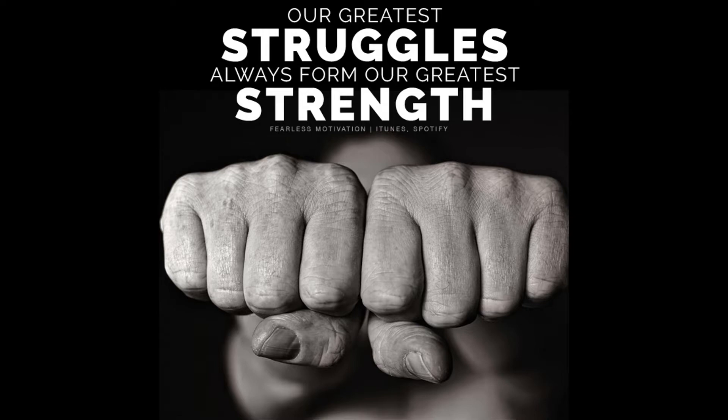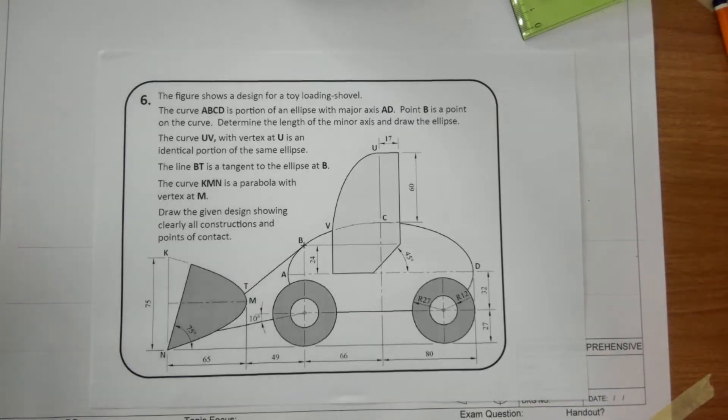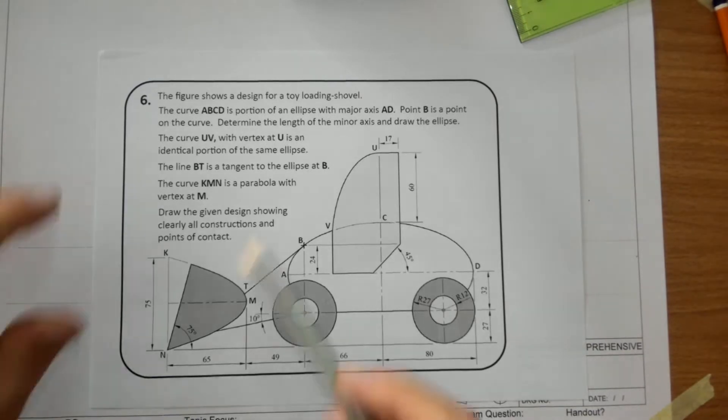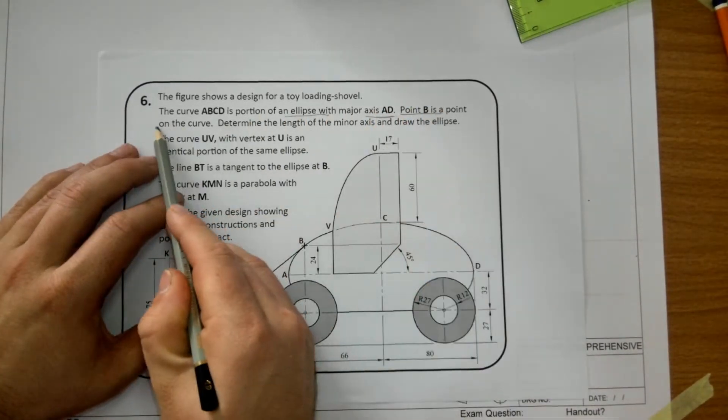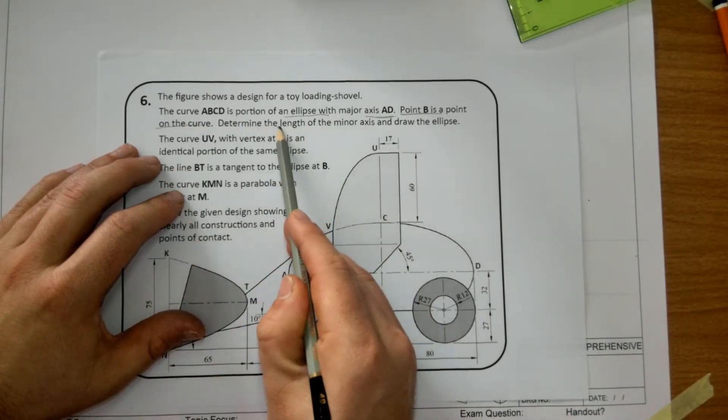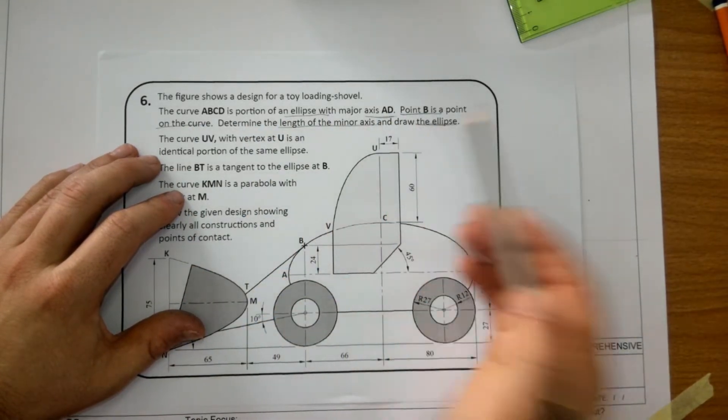I'm doing 2018 section B, question 6 higher level, the toy shovel. Curve ABCD is a portion of the ellipse with the major axis AD and point B is on the curve. We don't have a minor axis, we have to get the minor axis.